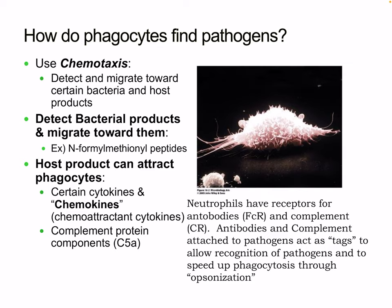We can detect bacterial products and migrate toward them, including N-formyl methionyl peptides. Host products can also attract phagocytes — cytokines called chemokines are chemoattractant cytokines — and complement protein C5a also has chemoattractant properties. Neutrophils have FC receptors for antibodies and complement receptors. Antibodies and complement attached to pathogens act as tags to allow recognition and speed up phagocytosis through opsonization — microbes get tagged and it allows innate cells to easily bind.